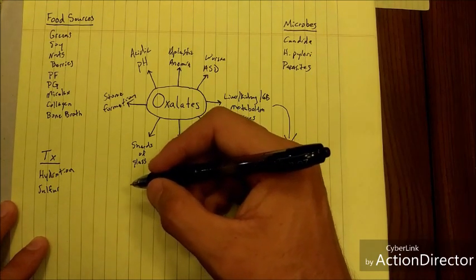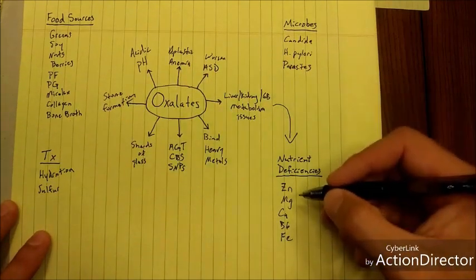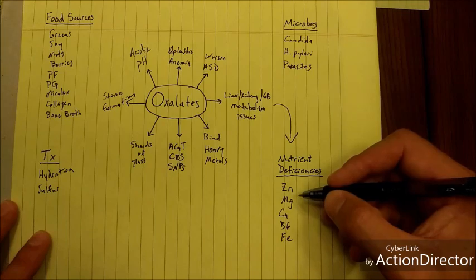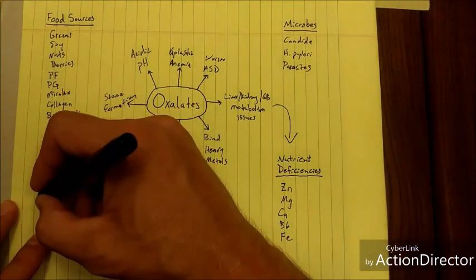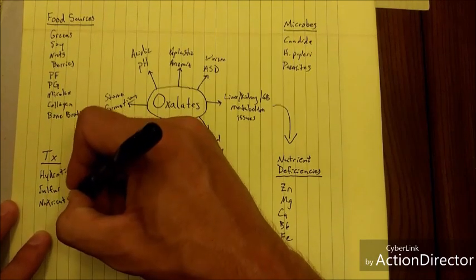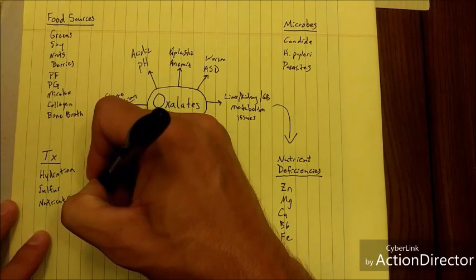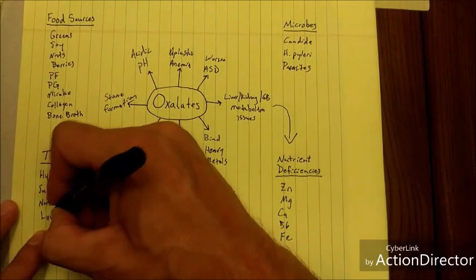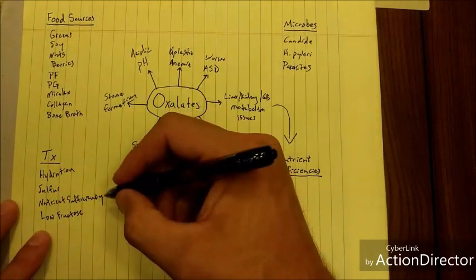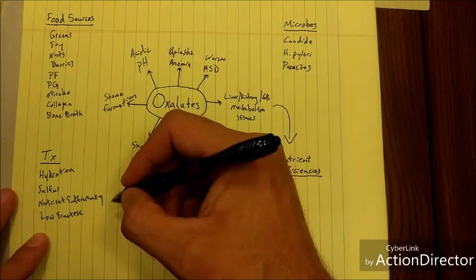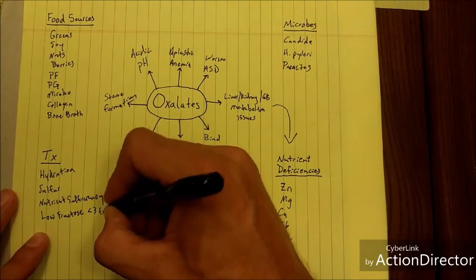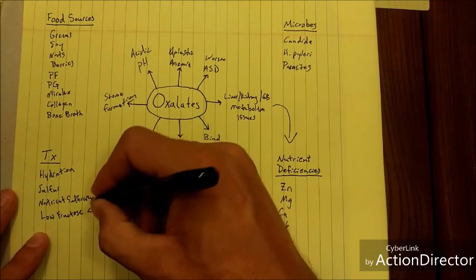If you have any of these deficiencies discussed over here, B6, magnesium, zinc, calcium, iron, these things can help oppose it by bringing those levels back up. So you want nutrient sufficiency. A low fructose diet will help lower oxalates because fruit is high in fructose and fructose promotes oxalates. High fructose corn syrup will promote oxalate formation. So, say, less than three fruits a day will help decrease your oxalate load.